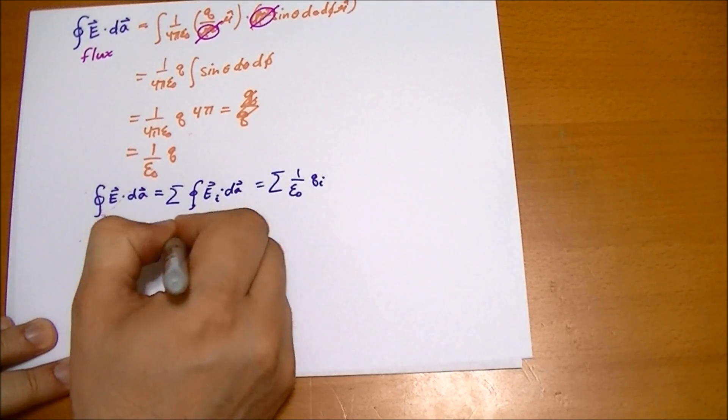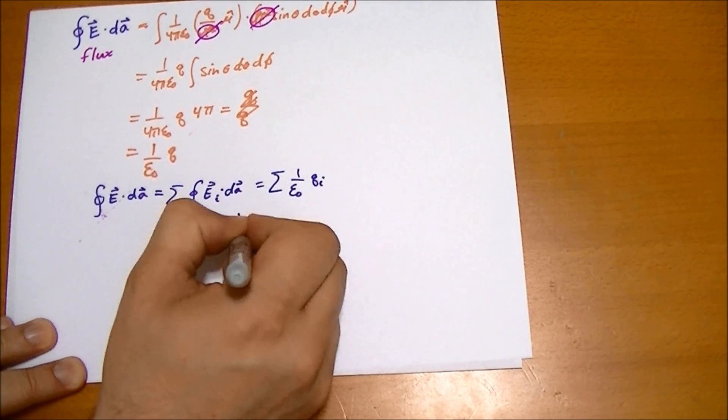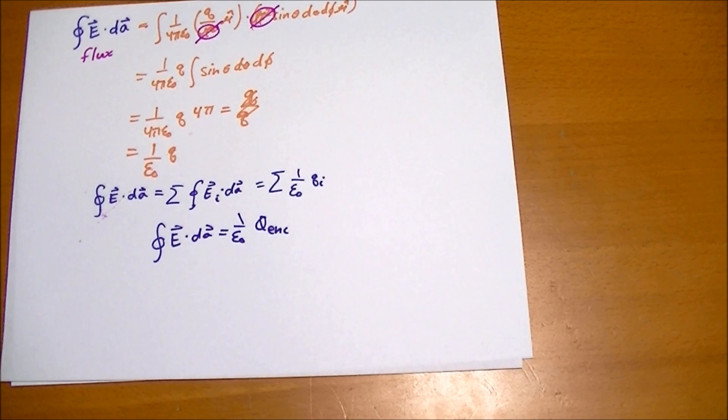written out like this: E vector dot dA vector is equal to 1 over epsilon naught times the total charge enclosed inside that surface. This is Gauss's law in its integral form.